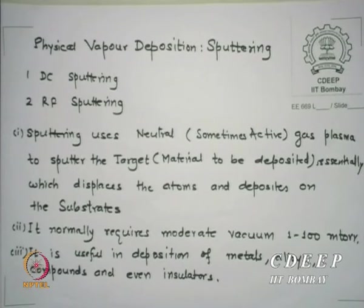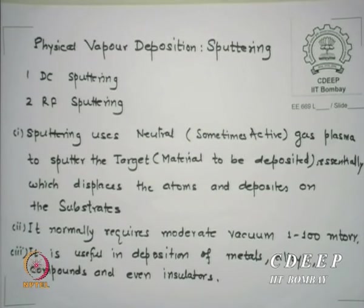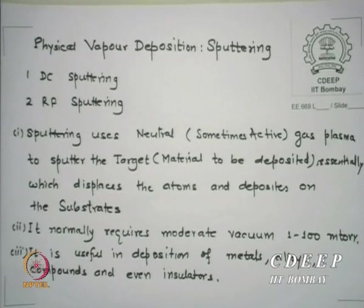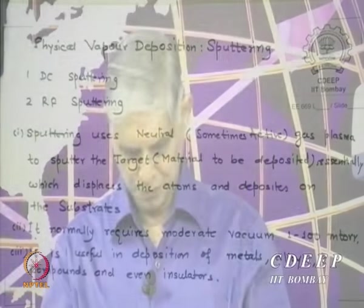Sputtering normally requires moderate vacuum, 1 to 100 millitorr, maybe sometimes 300 millitorr. It is useful in deposition of metals, alloys, compounds, and even insulators. That is the strength of sputtering — it can deposit almost anything. Mostly it is used for deposition of metals and alloys.